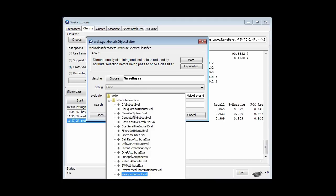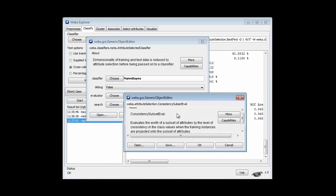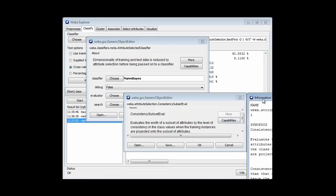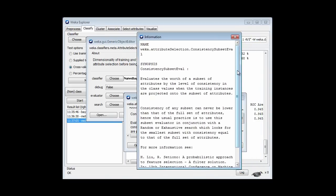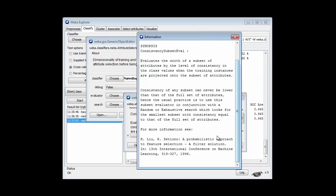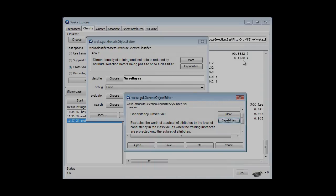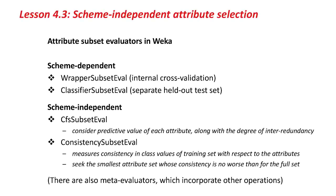If I just go over to Weka here and have a look at the different methods of attribute selection. I talked about ClassifierSubsetEval. That's a scheme-dependent method. ConsistencySubsetEval, that's one we're just talking about. If I look at that and get some more information, it evaluates the worth of a subset by consistency. To really understand that method, you need to go and look at the paper where it's referenced. As you can see, there's quite a lot of different methods of attribute SubsetEvaluators. This list includes meta-evaluators, which incorporate other operations. I'm not going to talk about that here.